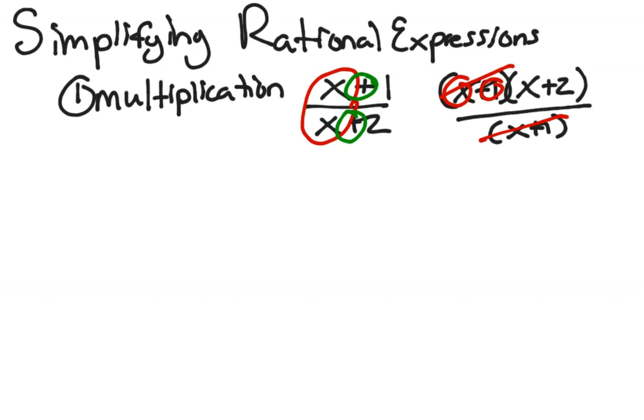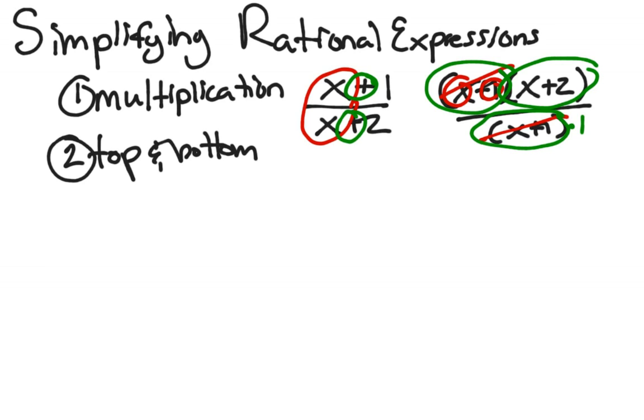And I can do that because that whole thing, all of x plus 1, is multiplying x plus 2. And at the bottom, we can think of this as multiplying an invisible one. Our other condition is that the same thing needs to be on top as on the bottom.